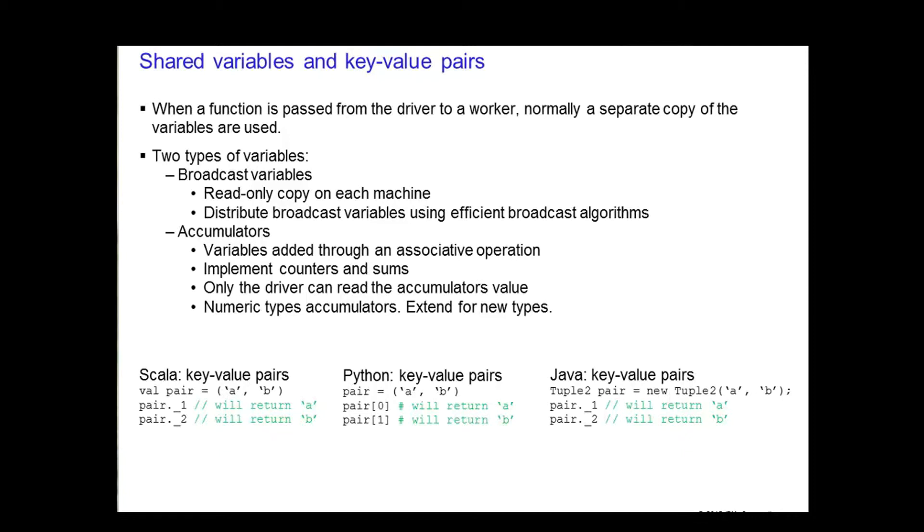Last but not least, key value pairs are available in Scala, Python and Java. In Scala, you create a key value pair RDD by typing val pair equals A and B.